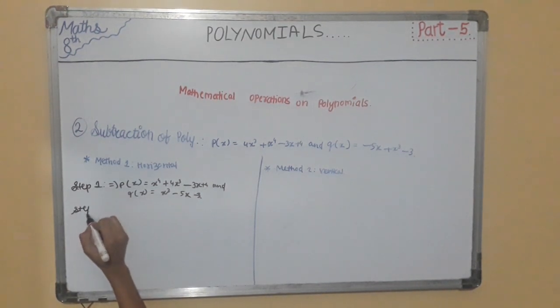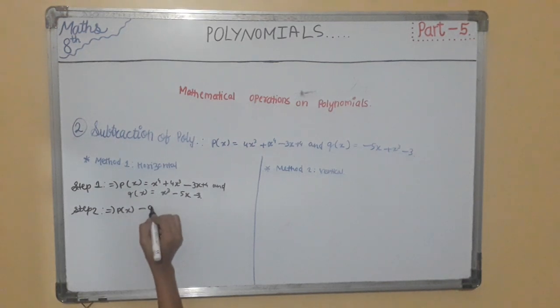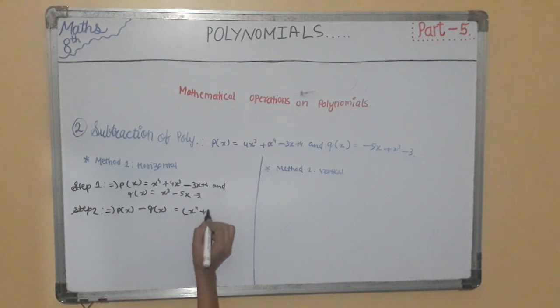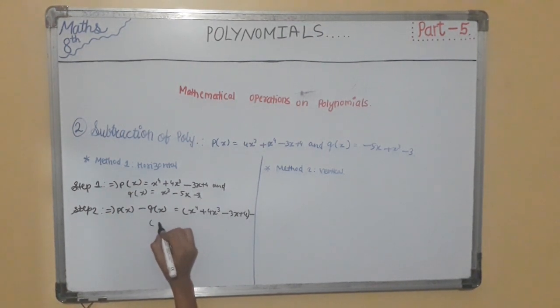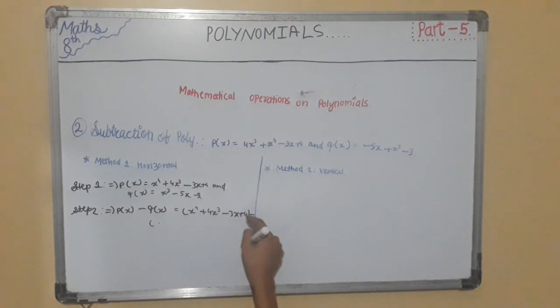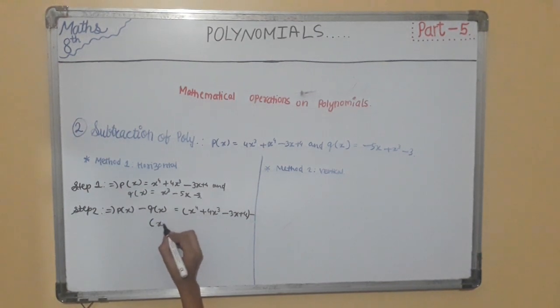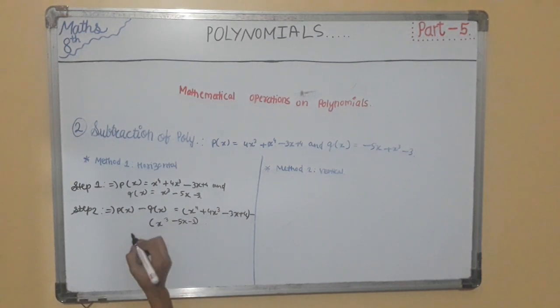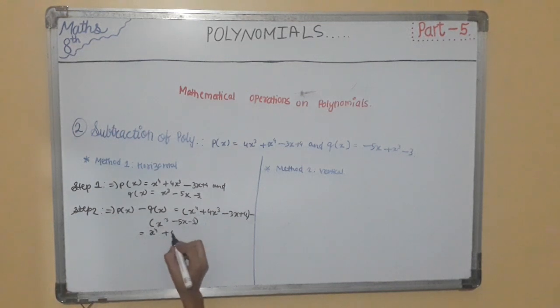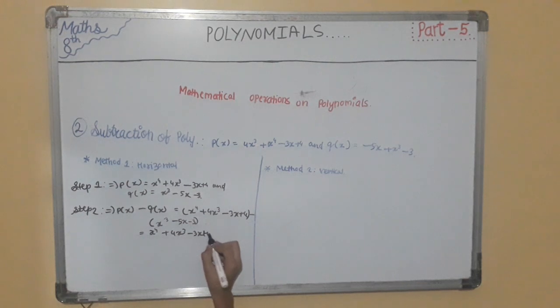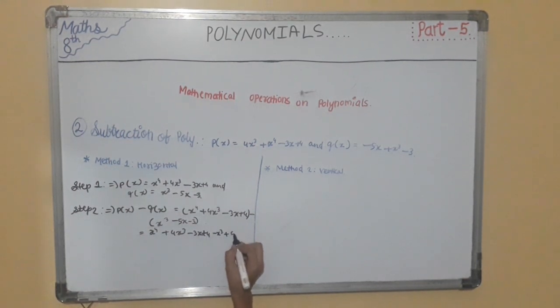Now step 2: Group the like terms retaining the signs of the first polynomial and changing the signs of the second polynomial. P(x) - Q(x) = x⁴ + 4x³ - 3x + 4 minus (x³ - 5x - 3). The second term signs will change due to subtraction. So this will be x⁴ + 4x³ - 3x + 4 - x³ + 5x + 3.